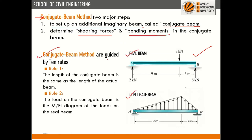The conjugate beam method is guided by the following rules. Rule one: the length of the conjugate beam is the same as the length of the actual beam. Rule two: the load on the conjugate beam is the M/EI diagram of the real beam — we draw the bending moment diagram and divide by EI.